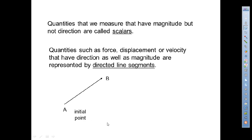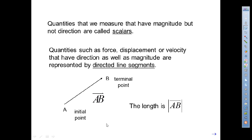A is our initial point, B is our terminal point, and we've marked that as ray AB, which is also known as vector AB. The length is signified by what looks like the absolute value of AB, but it's actually read as the magnitude of AB. The length of this thing is the magnitude of whatever our quantity is — whether it be force, displacement, velocity, or whatever.